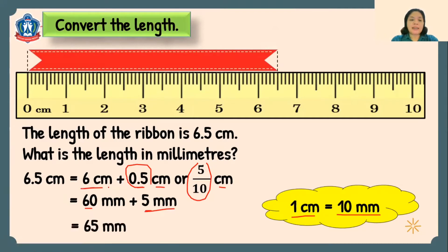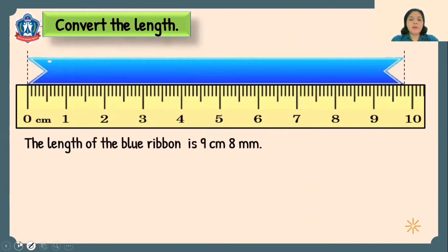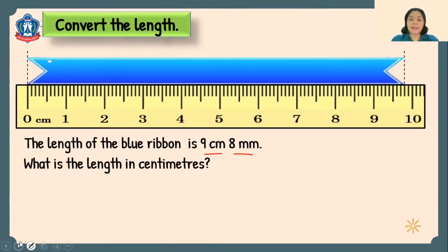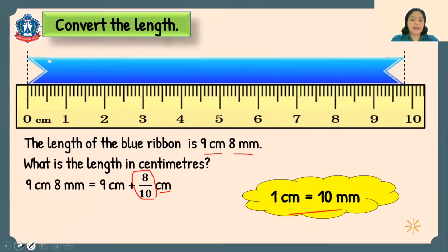We just multiplied 6 centimeters by 10 to get 60. Now look at the blue ribbon. This blue ribbon measures 9 centimeters 8 millimeters. What is the length using only centimeters? So 9 centimeters 8 millimeters is equal to 9 cm plus 8 tenths of a centimeter. Converting to decimal, that is 0.8 centimeters. Therefore, the blue ribbon measures 9.8 centimeters.